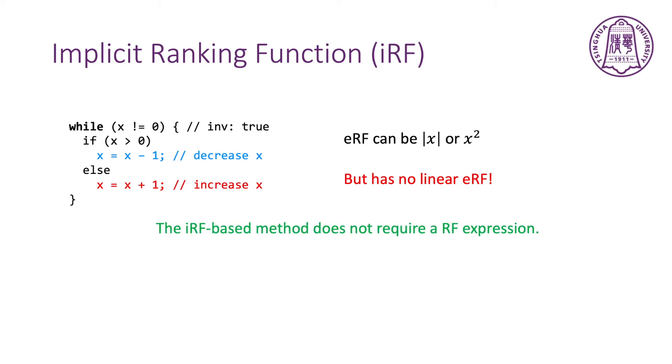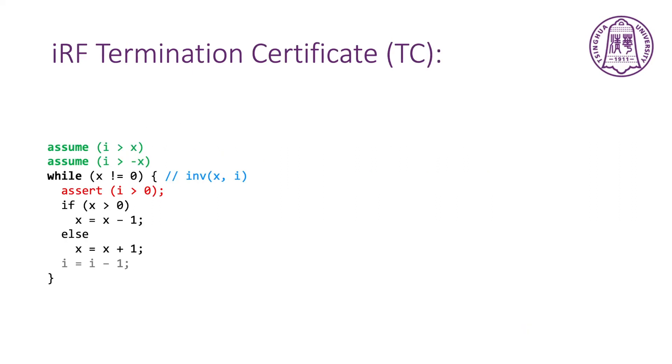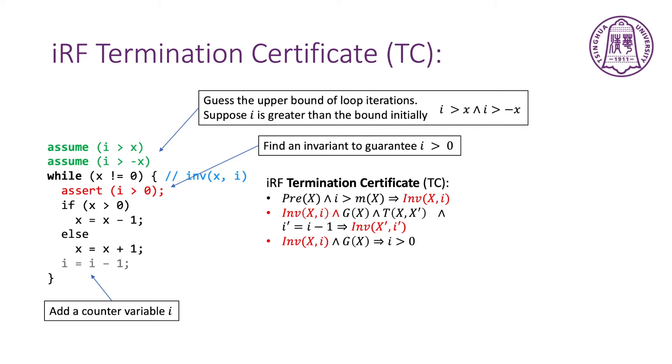So, we can use the implicit ranking function-based method. It does not require an explicit ranking function expression. The implicit ranking function method adds a counter-variable i in the loop binding first. Then, it guesses the upper bound of loop iterations and suppose i is greater than the bound initially. If we can find the invariant to guarantee i is greater than 0 during the loop iteration, the termination of the program is proved. We call this argument termination certificate and TC for short. We can find that this method heavily relies on the invariant.